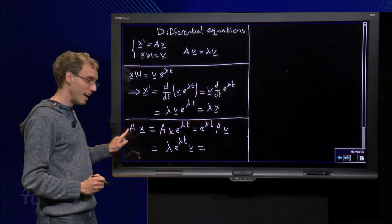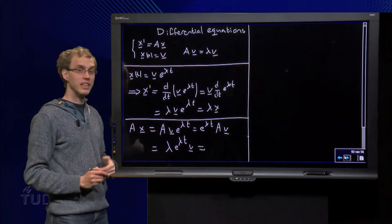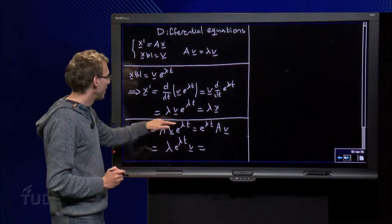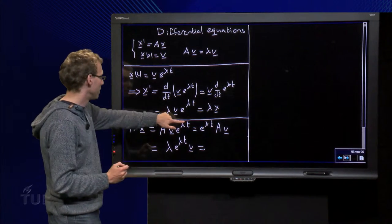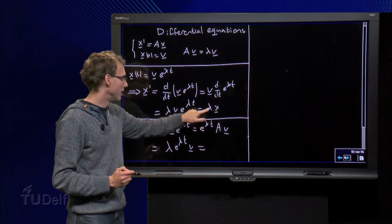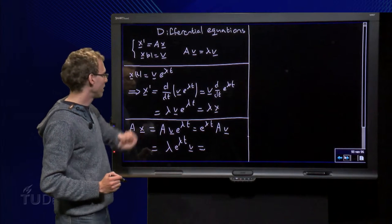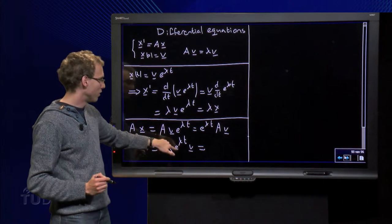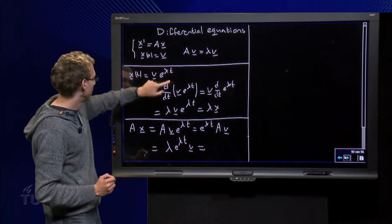And if we compute A times x, we get A times x equals A times v e to the power lambda t. Now the e to the power lambda t is just a scalar, it can be taken out, it can be taken in front of the matrix A, so we get e to the power lambda t times A times v. However, we know A times v equals lambda times v, so we get lambda e to the power lambda t times v equals lambda, and here we have our x again.